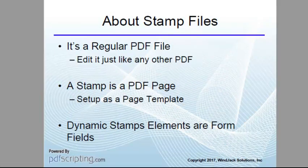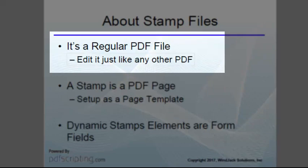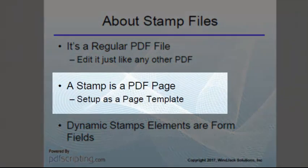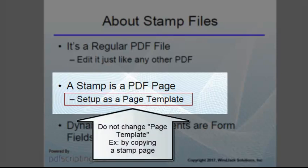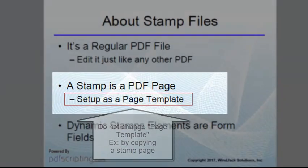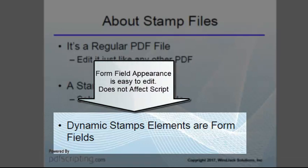Let's do some review on how stamps are put together so we can understand how all this works. A stamp file is a regular PDF file that we can edit just like any other PDF. Each of the actual stamps in that file is a page in the PDF, but not just any pages — only pages that have been turned into page templates can be used as stamps. We only need to know that a stamp page has this special feature that we don't want to screw up. The last thing is that the dynamic part of a dynamic stamp is a form field, because form fields can be changed dynamically.